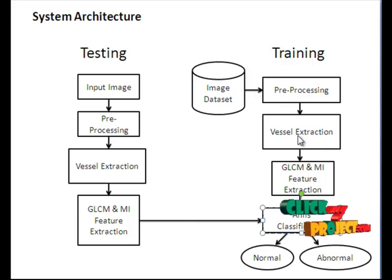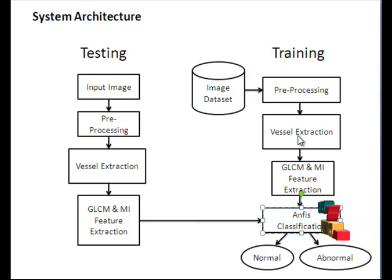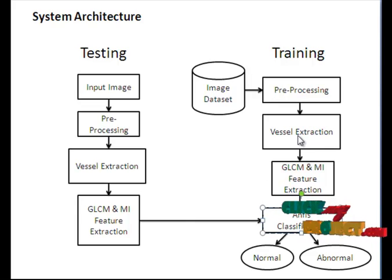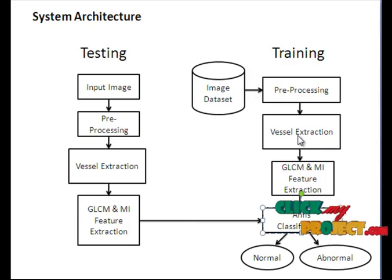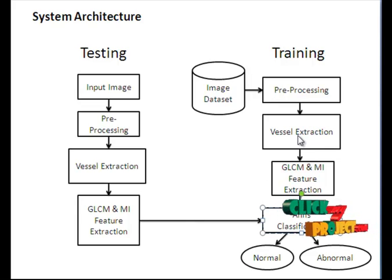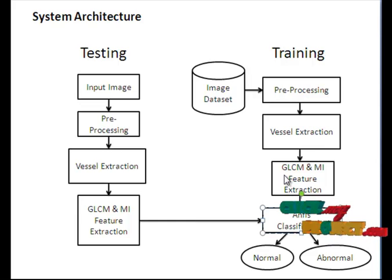In vessel extraction, we perform morphological operations. First, we remove the central light reflection from the retinal image, then we extract the background image, and finally we extract the vessel using a thresholding approach.